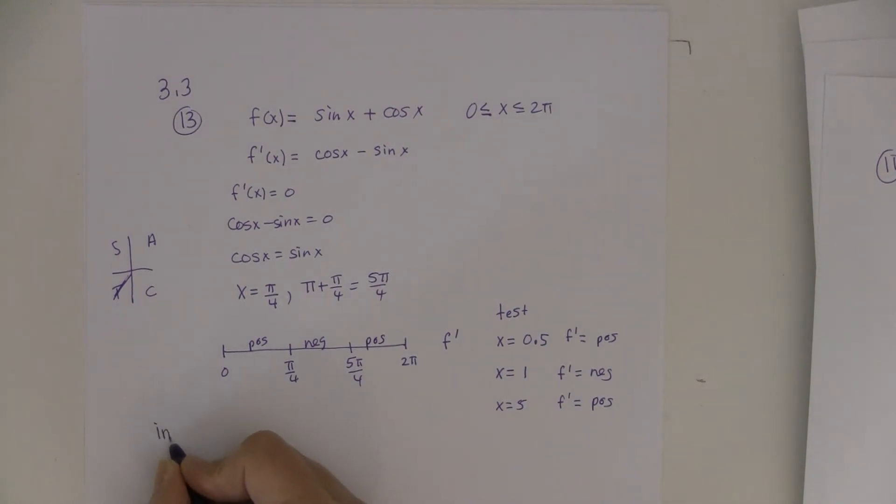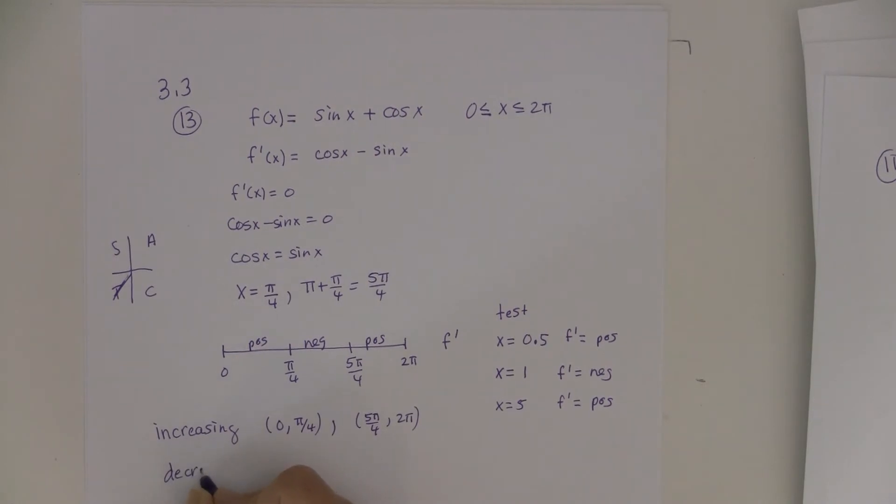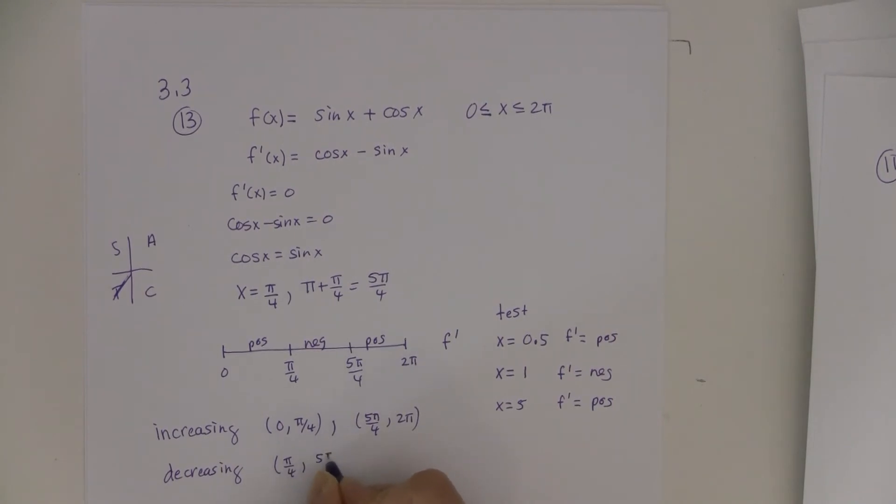And so it's increasing from 0 to pi over 4 and also from 5 pi over 4 to 2 pi and decreasing from pi over 4 to 5 pi over 4.